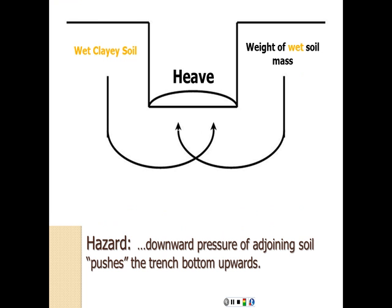The third hazard is heaving, which is a downward pressure of adjoining soil that pushes the trench bottom upwards. The weight of wet soil masses pushes the bottom upward, causing collapse. This particularly happens in wet clay soil where particles are very close together and form lumps, which can cause this heaving.